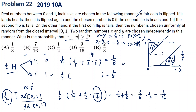Adding all three cases together: one-fourth plus one-eighth plus one-eighth plus one-sixteenth. Converting to sixteenths: four-sixteenths plus three-sixteenths gives seven-sixteenths. The answer is seven-sixteenths.